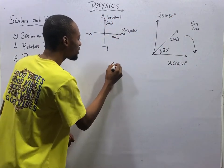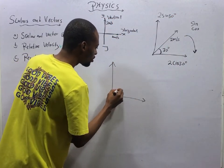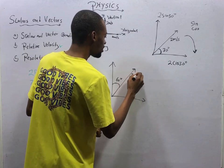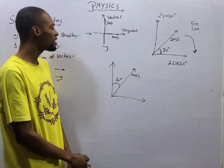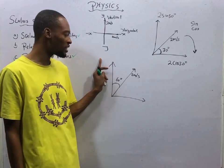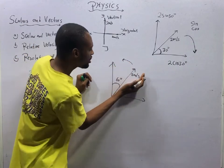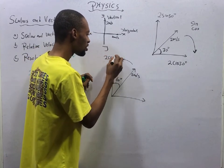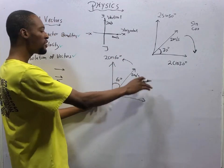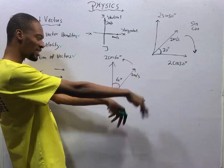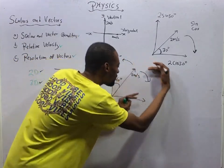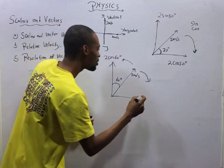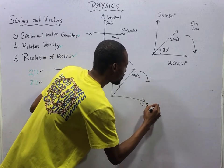Which means if I have something like this at 60 degrees, here is 2 meters per second. If I am resolving this to the Y-axis or to the vertical direction, I am closing the angle — I am pushing it this way and the angle is closing. Since the angle is closing, it is 2 cos 60 degrees. If I am resolving it to the horizontal or to the X-axis, as I draw it down, you notice that the angle is opening and expanding. So here it is 2 sin 60 degrees.